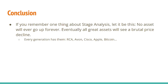If you remember one thing about stage analysis, let it be this: no asset will go up forever. Eventually, all great assets will see a brutal price decline — just think back to the stocks of RCA, Avon, Cisco, Apple, and even potentially Bitcoin today. Stage analysis allows you to sidestep that decline by closing your long position, and it can even allow you to profit by signaling the best time to enter short.